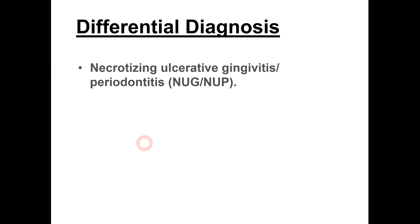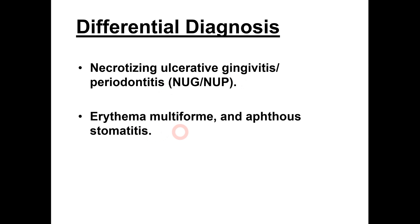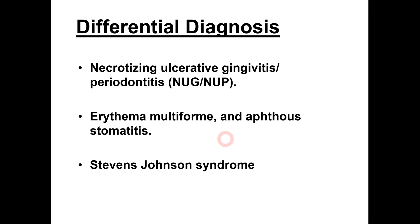Let's talk about differential diagnosis — conditions that might present similarly to acute herpetic gingivostomatitis. Firstly, necrotizing ulcerative gingivitis/periodontitis also mimics this condition. Other differentials include erythema multiforme and aphthous stomatitis. Lastly, Stevens-Johnson syndrome. These are three differential diagnoses to keep in mind when identifying whether a patient is actually suffering from acute herpetic gingivostomatitis.